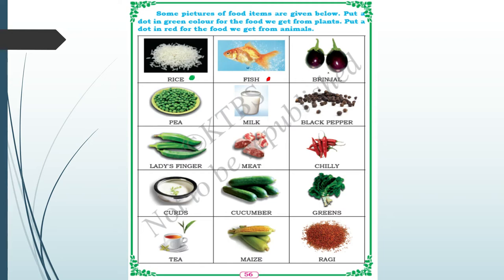Brinjal we get from plants, so use a green dot. Pea, lady's finger, chili, black pepper, cucumber, greens, maize, tea, ragi — all these we get from plants, so give green dots. For milk, meat, and curd, which we get from animals, give red dots.